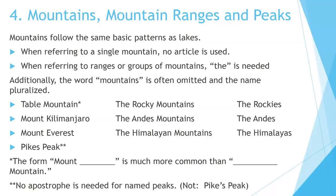Number 4: Mountains, mountain ranges, and peaks. Mountains follow the same basic patterns as lakes. When referring to a single mountain, no article is used. When referring to ranges or groups of mountains, THE is needed. Additionally, the word mountains is often omitted and the name pluralized. For example: Table Mountain, Mount Kilimanjaro, Mount Everest, Pike's Peak — no article. The Rocky Mountains, The Andes Mountains, The Himalayan Mountains. Notice the N on Himalayan changes it into an adjective form. The Rockies, The Andes, The Himalayas — we use the plural form here.